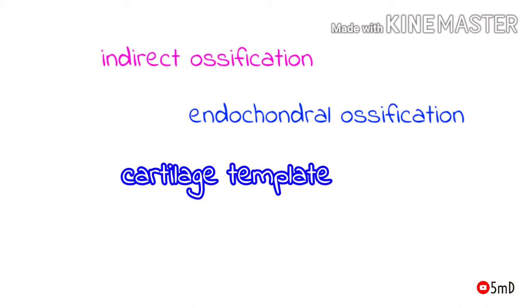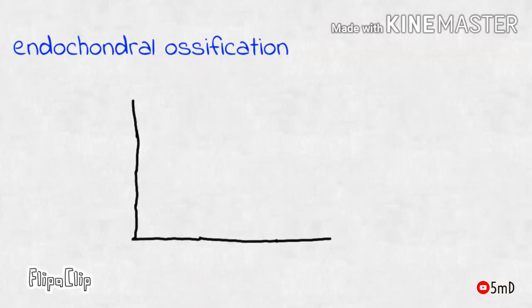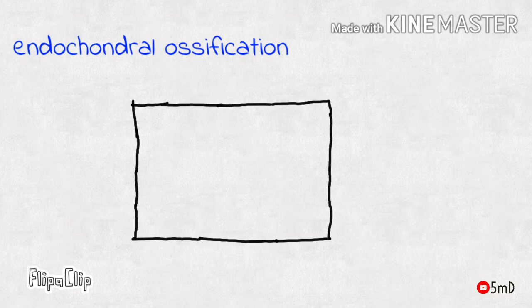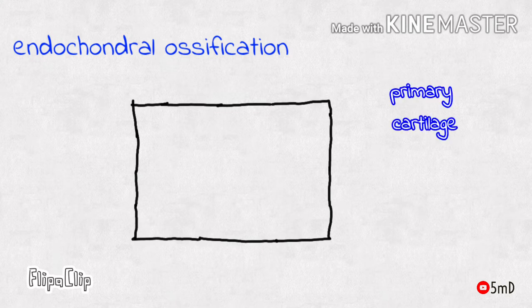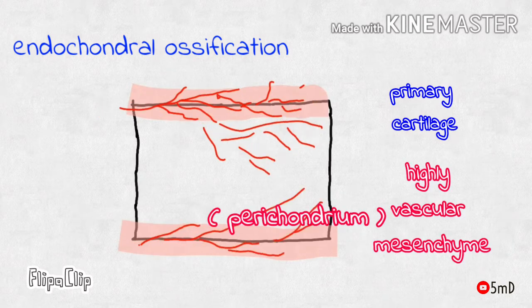Let us see the sequence in which cartilage turns into bone in endochondral ossification. First, during embryogenesis, a primary cartilage is formed which acts as a template for the future bone. This cartilage model gets surrounded by highly vascular mesenchyme known as the perichondrium.